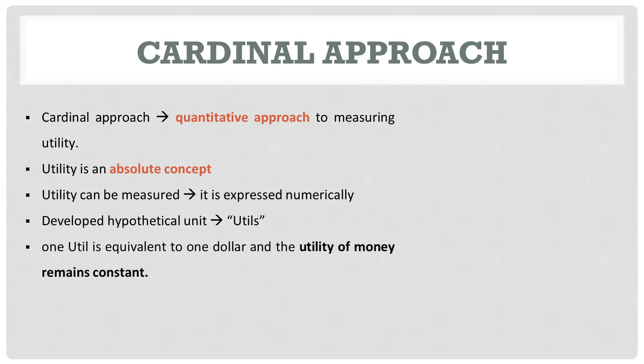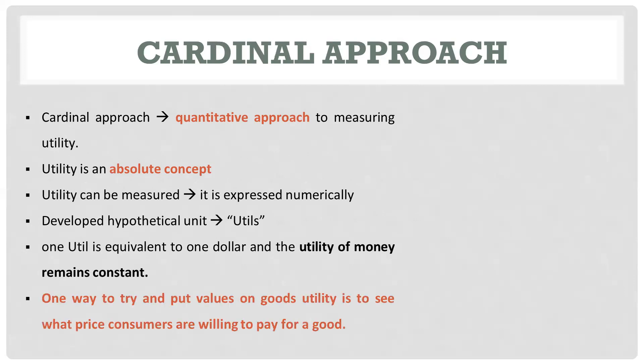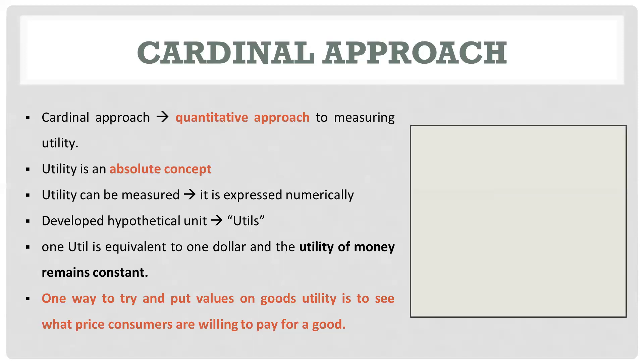Economists developed a hypothetical unit called 'utiles,' and one utile is equivalent to one dollar. They assume that the utility of money remains constant. So one way to put values on a good's utility is to see what price consumers are willing to pay for that good.